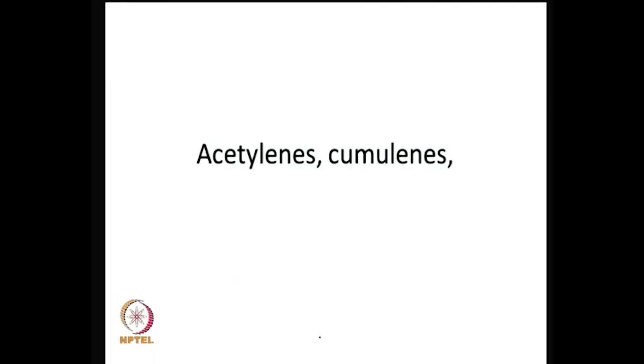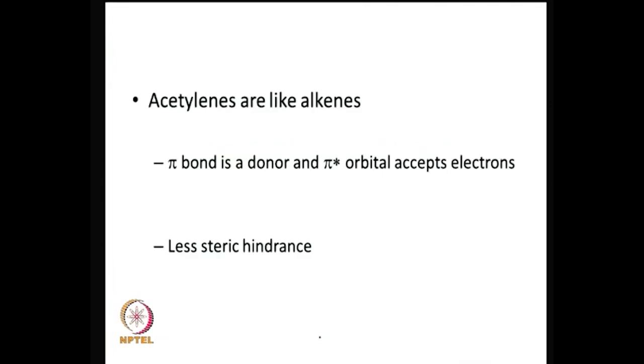In this lecture, we will look at metal complexes that are formed by acetylenes. These are organometallic compounds formed with acetylenes and organometallic fragments. To begin with, acetylenes are very much like alkenes.